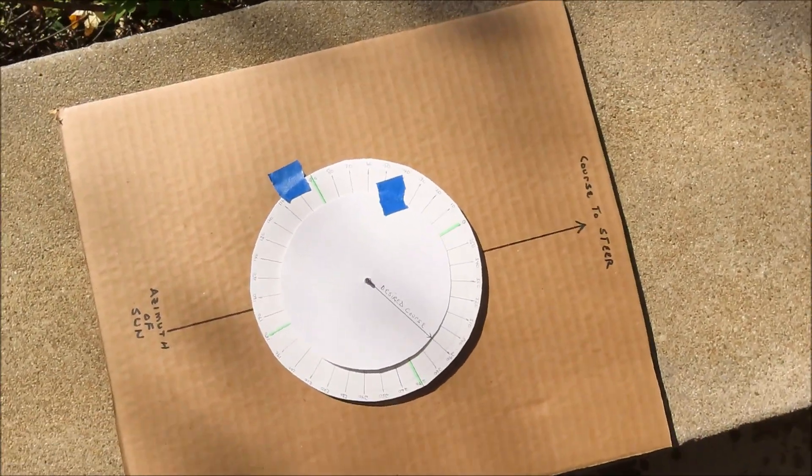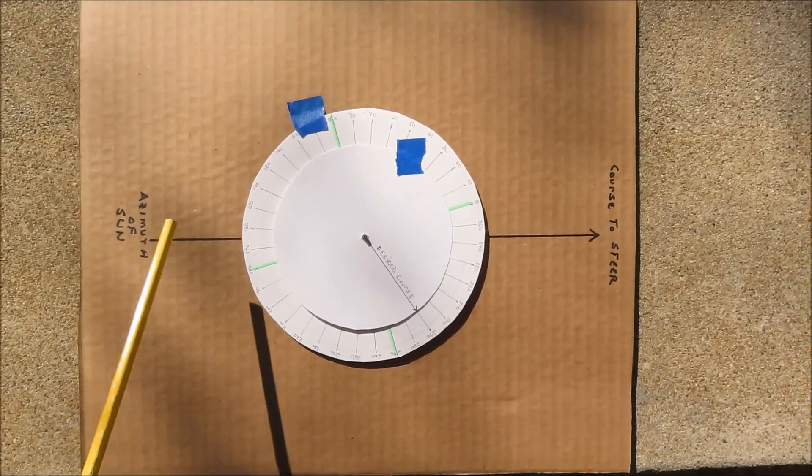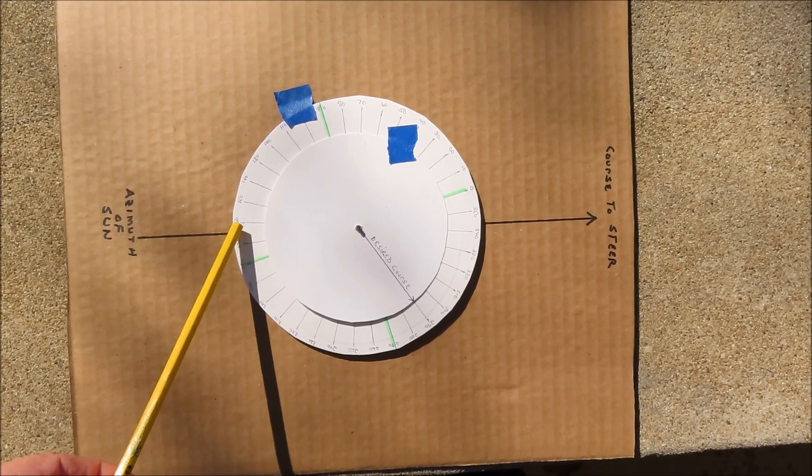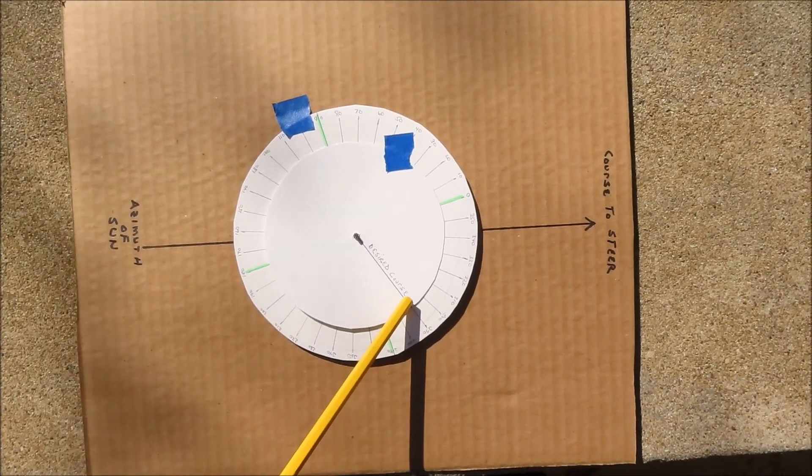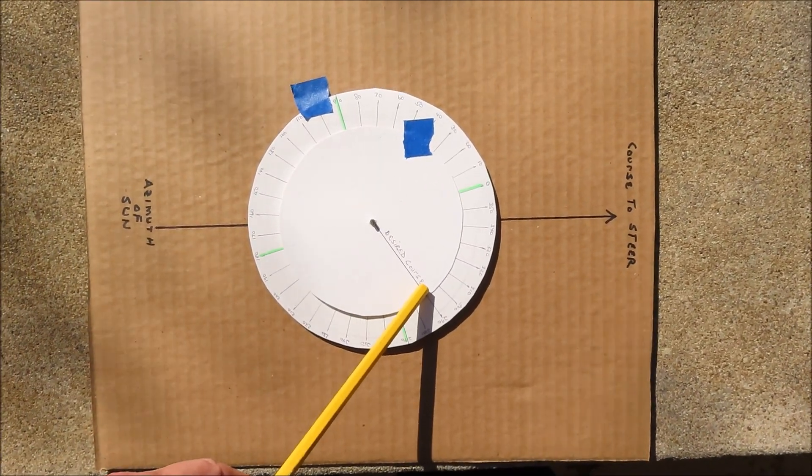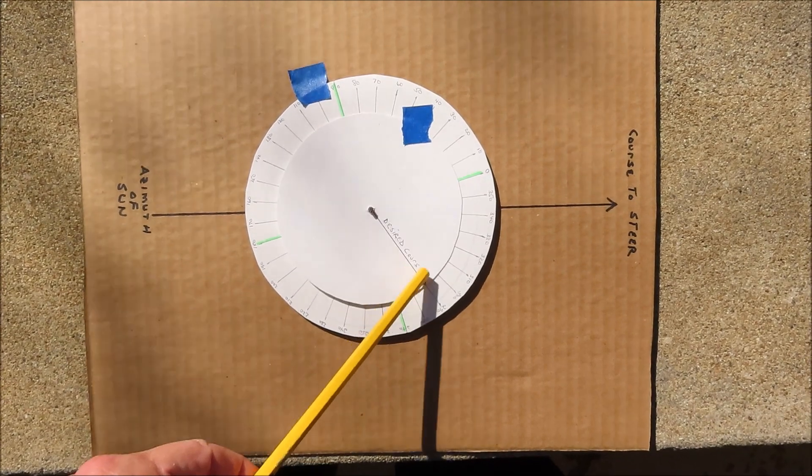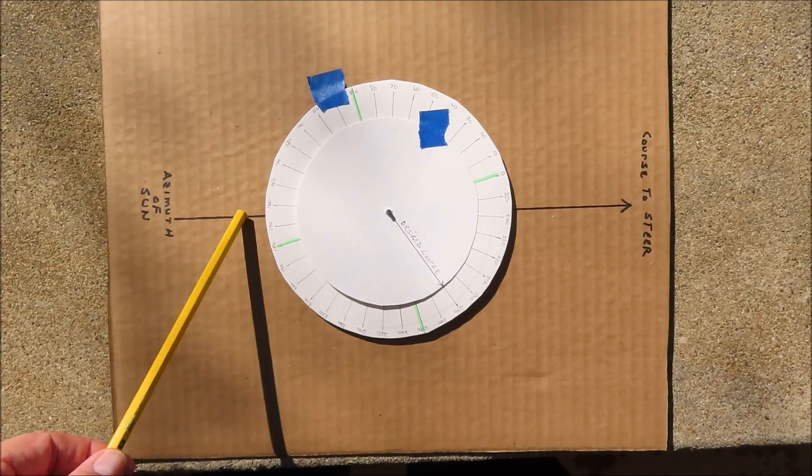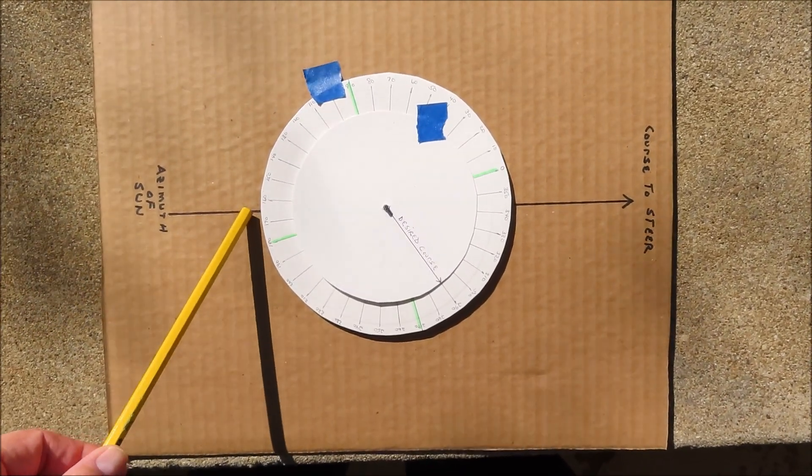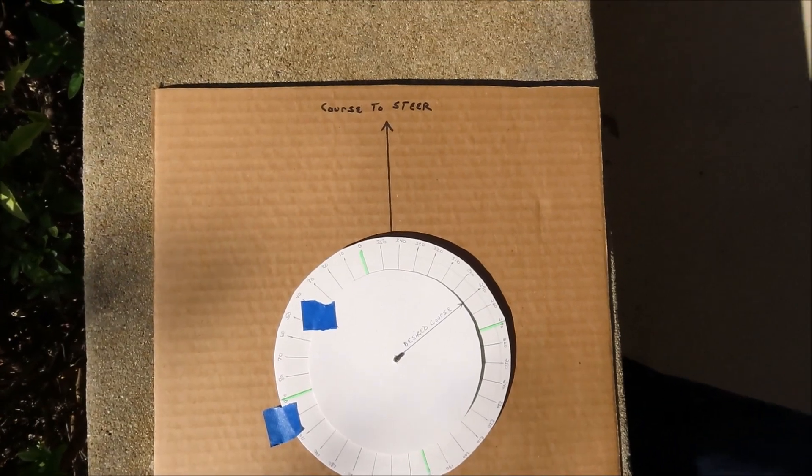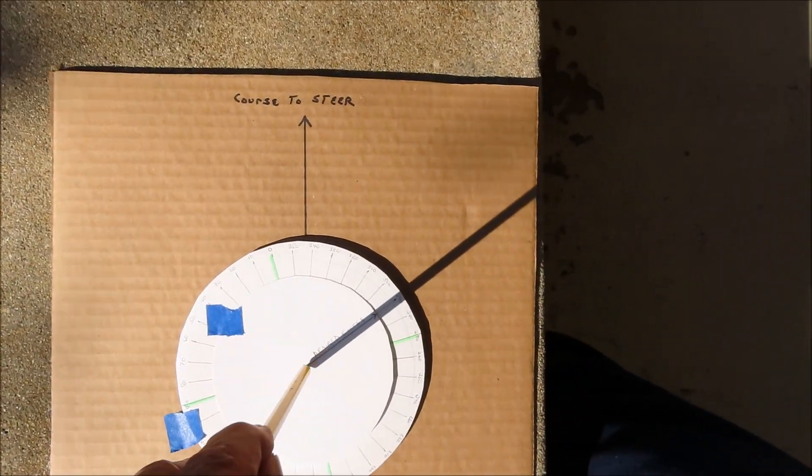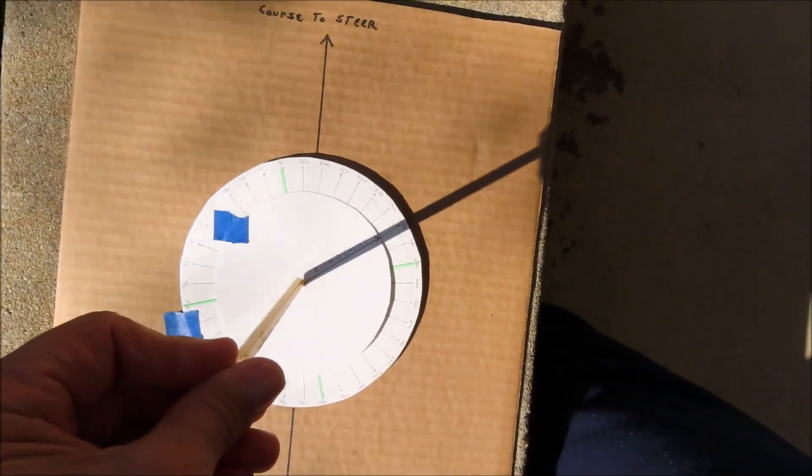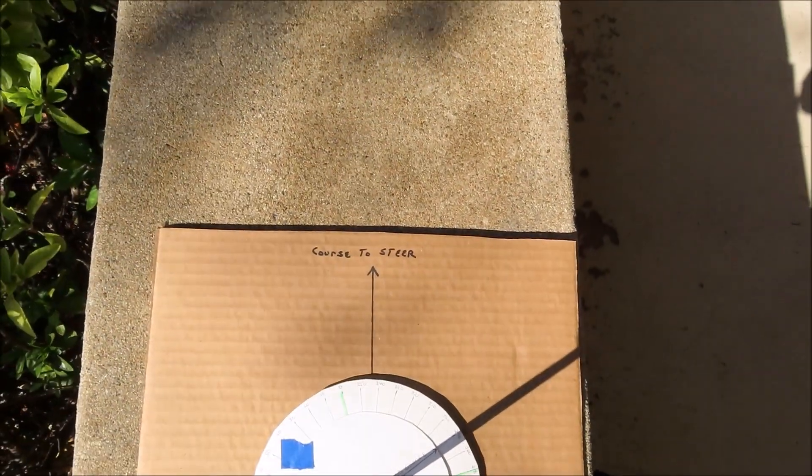So as the day progresses, the azimuth of the sun would increase, so you'd have to keep adjusting this dial. The course you want to steer might be constant, so you wouldn't adjust this. You would just turn this to match the current azimuth of the sun, which you would get out of a set of tables. And then you would orient the vehicle so that the shadow is falling on that 290. And then this is the direction that you drive in.